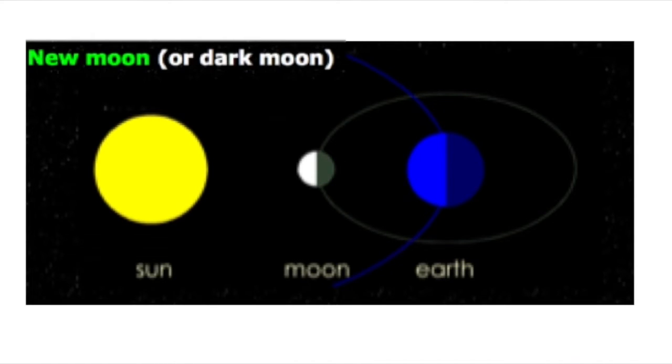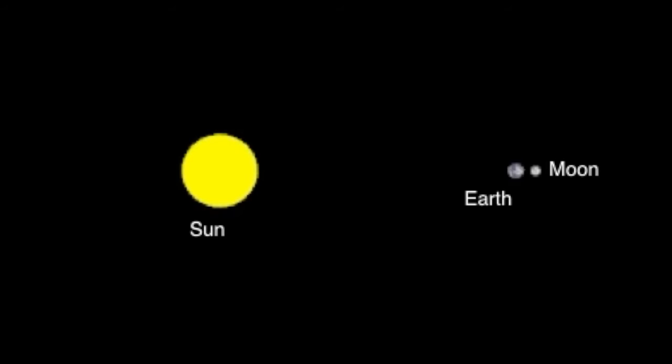Now what is it that causes the different phases of the moon? It all has to do with the fact that the moon revolves around the Earth, all the while the Earth is revolving around the Sun. So depending on where the moon is in its orbit around the Earth, the half of the moon that is lit by the Sun appears to us here on Earth to change shape.